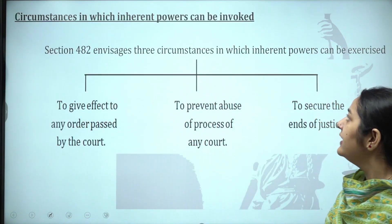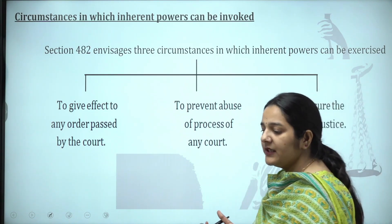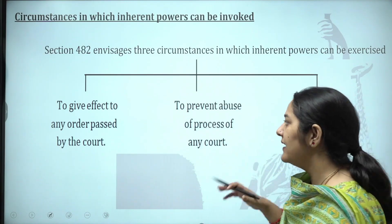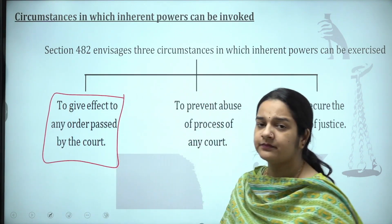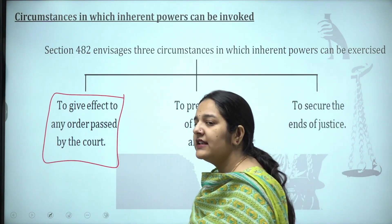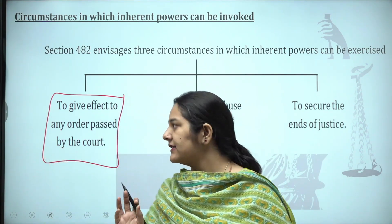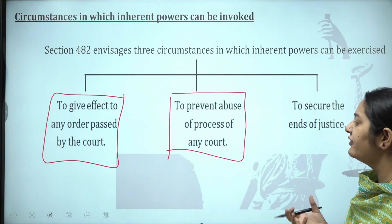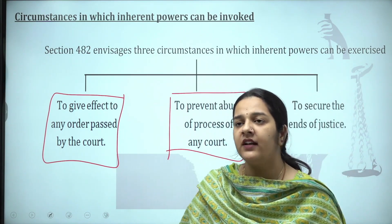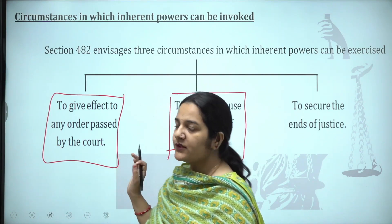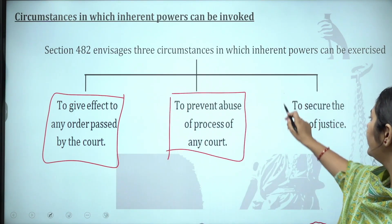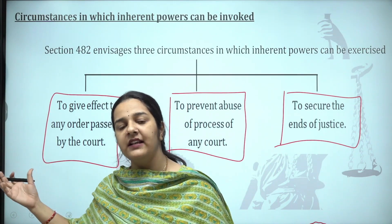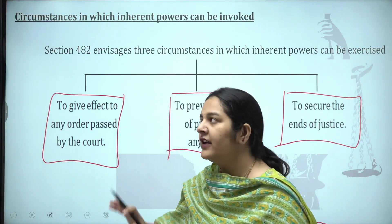Next, the circumstances in which inherent powers can be invoked under CRPC. The first circumstance is to give effect to any order passed by the court. If any order has been passed, the High Court can exercise its inherent power to give it effect. Second, to prevent abuse of the process of any court — if a court's process is being abused or used in a wrong way, inherent power can be exercised to stop it. Third, to secure the ends of justice — if justice is being denied, the High Court can exercise inherent power even where CRPC does not specifically provide for it.